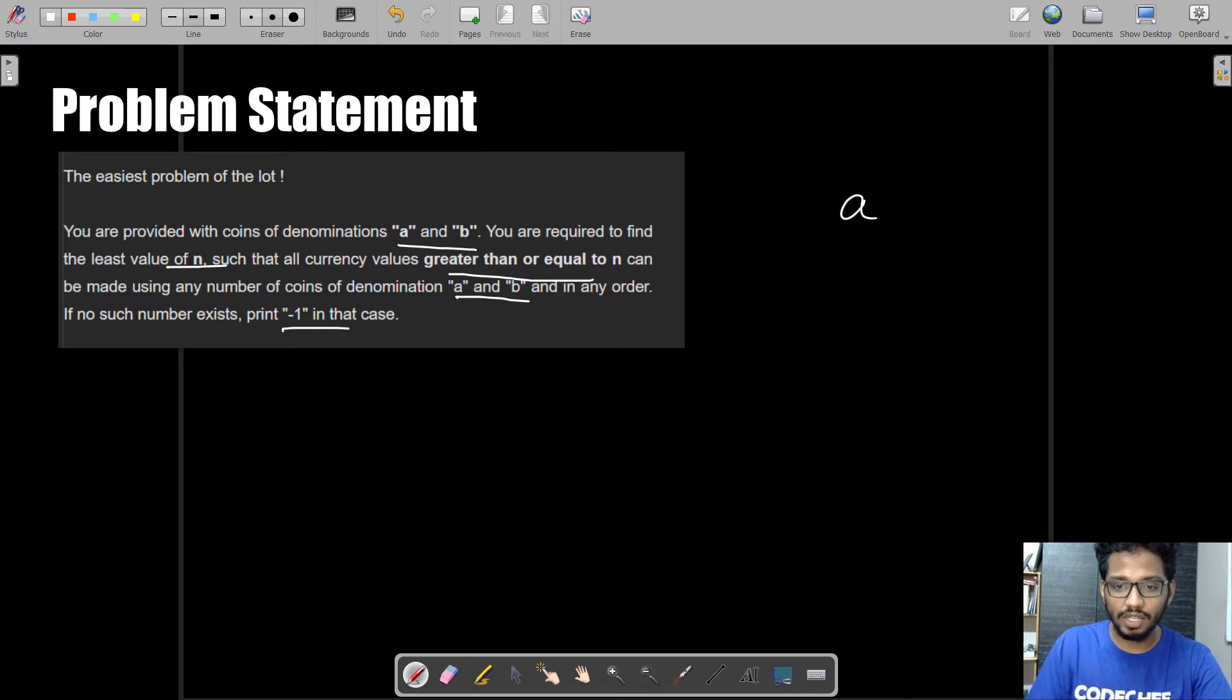What they are trying to say is that you will be given two integers a and b, and you need to find the least integer n greater than which all integers m are of the form ax + by.